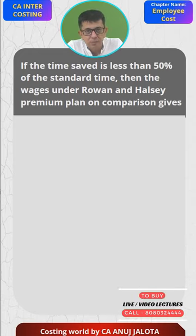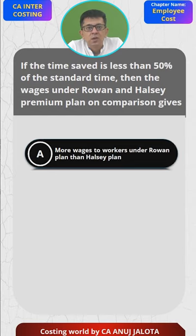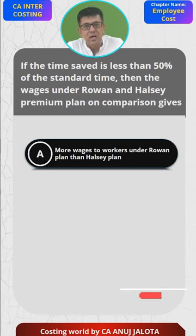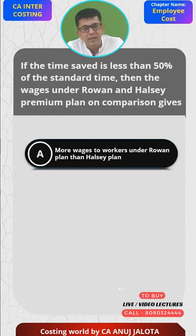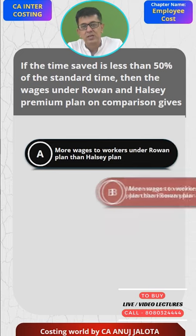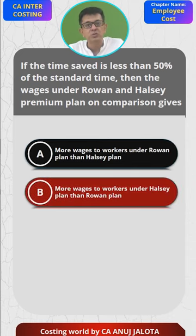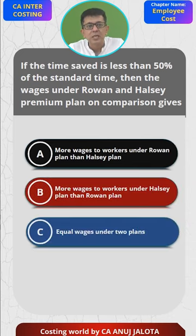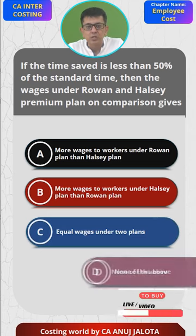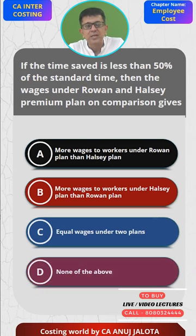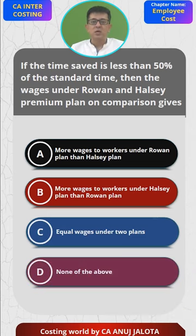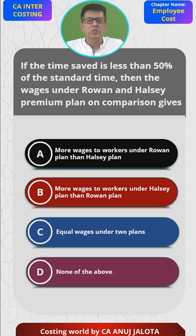Option A: more wages to the workers under Rowan plan than Halsey plan. Option B: more wages to the workers under Halsey plan than Rowan plan. Option C: equal wages under the two plans. Option D: none of the above. Now recall the first question of labor costing that we have all done.